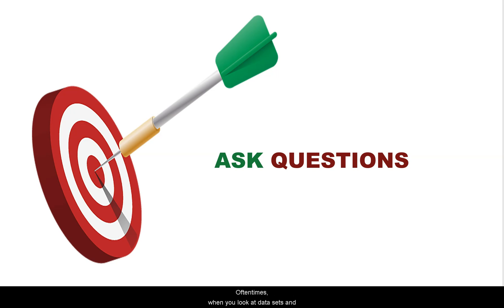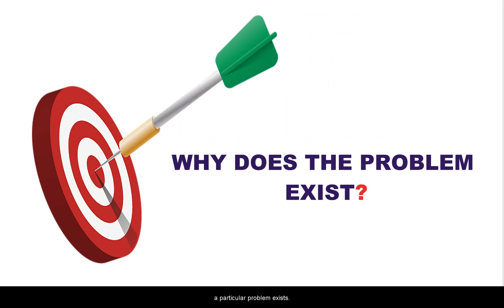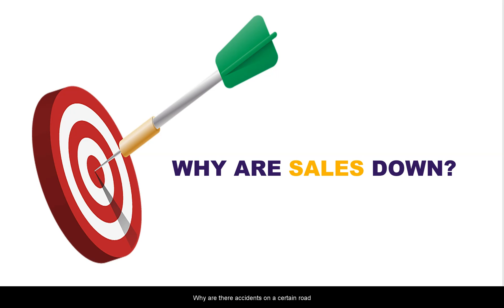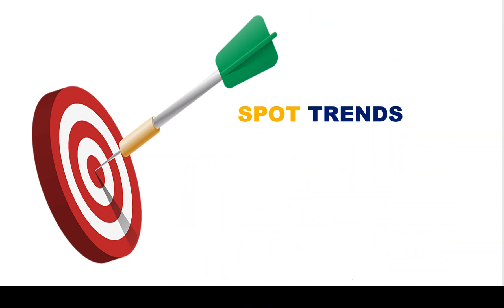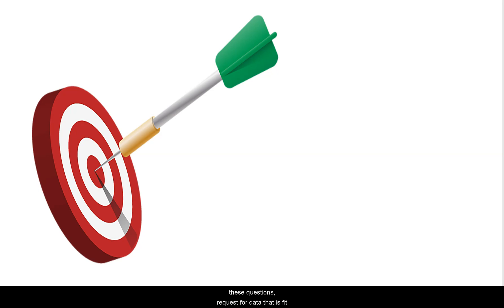Often times, when you look at datasets and the questions the organization wants to ask, you will see that there is a need to understand why a particular problem exists. Examples could be: why are sales falling in a particular region? Why are there accidents on a certain road at a certain junction at a particular point in time? What happens? Why does it happen? You should be able to look at these questions and request data that is fit to respond to those questions.